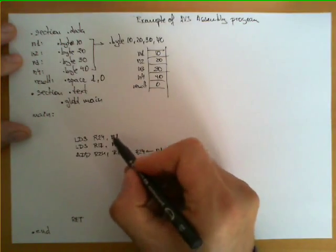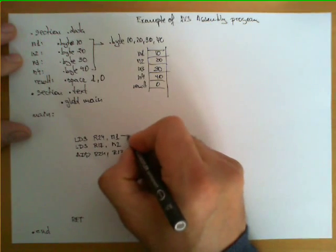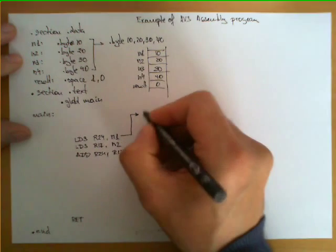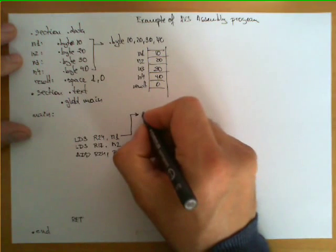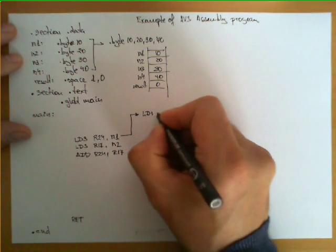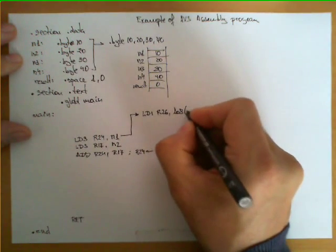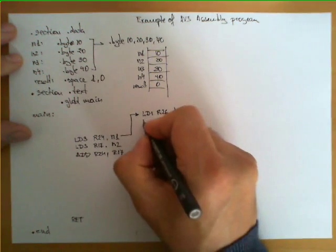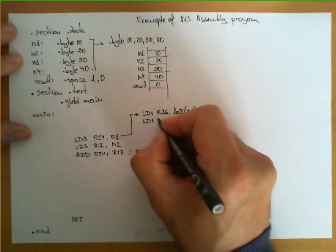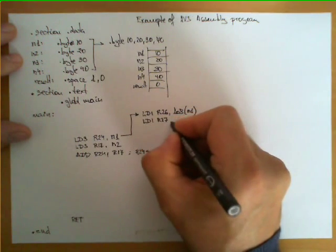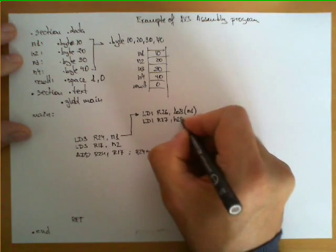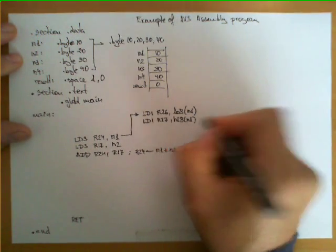However, we can use these labels in a different way. So this instruction would be equivalent to perform the following. Suppose that I first load the immediate in R26, L08, N1 and next to this LDI, R27, HI8, N1. Now what have I done here?